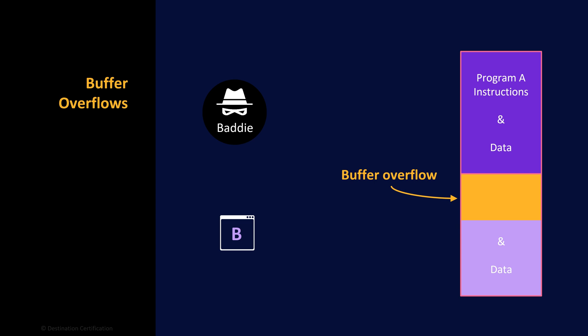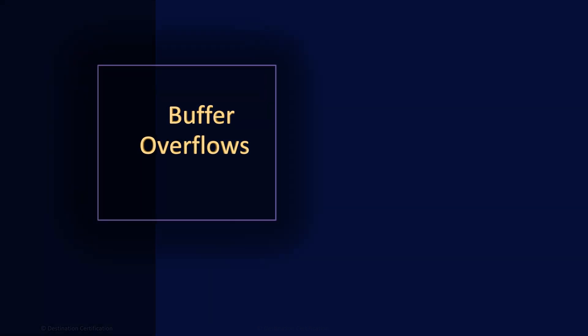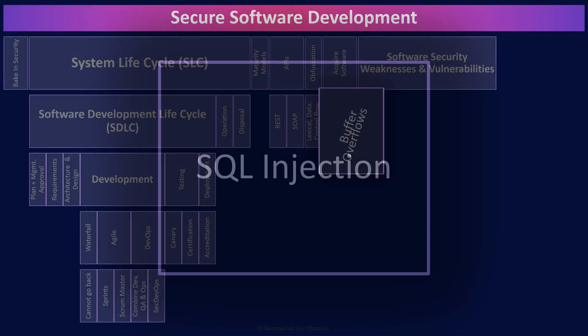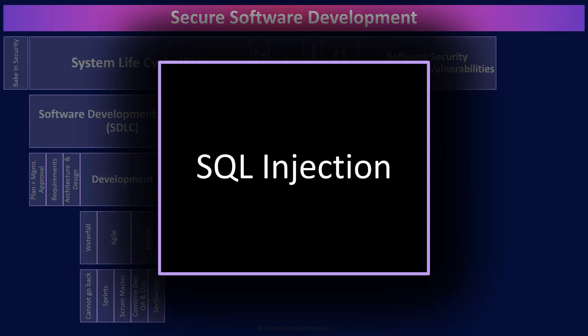Another technique that can be used is address space layout randomization, ASLR, which guards against buffer overflow attacks by randomizing the location where system executables are loaded into memory. SQL injection is where malicious structured query language (SQL) code is sent to a web application, and then the web application passes the malicious SQL code onto the database, essentially allowing the attacker to directly control a database that they should absolutely not have the ability to control. I explain SQL injection in more detail in the vulnerabilities video in Domain 3, linked in the description below.